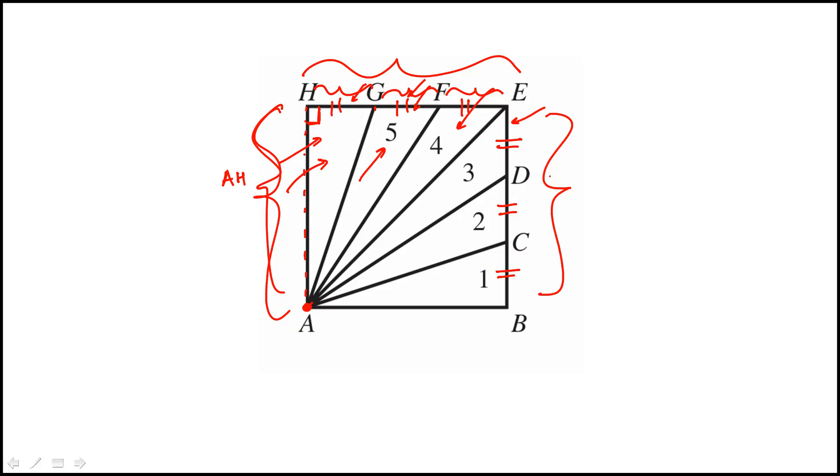And if you look at these other triangles, the bases are all the same as earlier, and the altitude here is AB. And AB is also equal to AH because it's a square. So all five of these triangles will have the same area as that of triangle AGH.